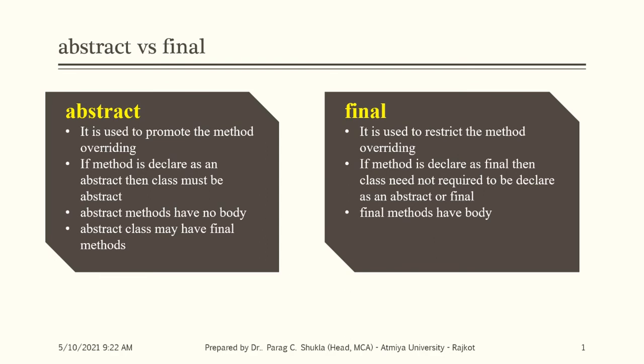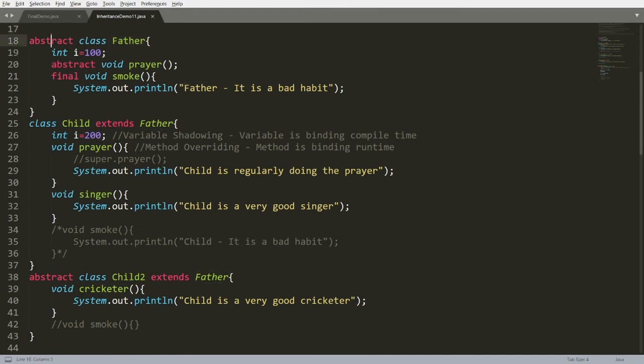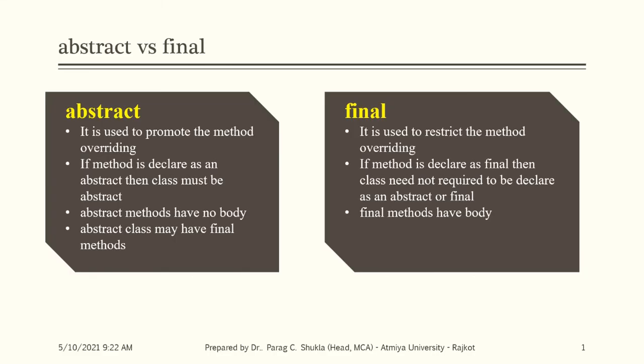An abstract class may have final methods — for example, this father class is abstract and it may contain final methods. However, a final class does not have final or abstract methods. Because a final class has no inheritance, and without inheritance there is no use for final or abstract — since final restricts overriding and abstract promotes overriding, both of which require inheritance.